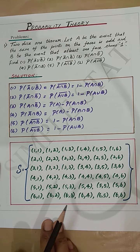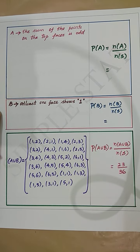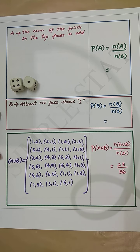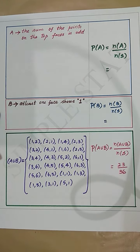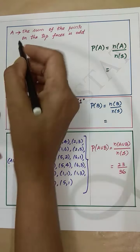Event A is the event that the sum of the points on the top faces is odd — that is, when two dice are thrown, A is the event of getting the sum of the numbers on the top faces as an odd number. Let's now find the possibilities for event A.